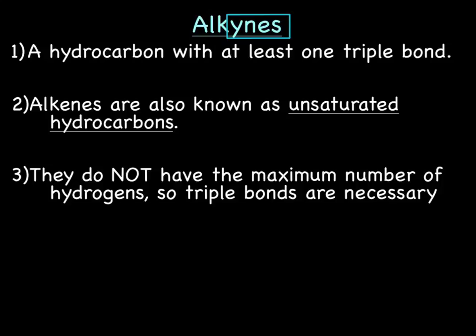Alkynes are hydrocarbons with at least one triple bond. They are also known as unsaturated because they do not have the maximum number of hydrogens, making a triple bond necessary.